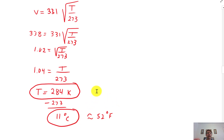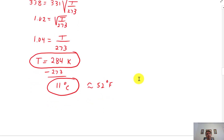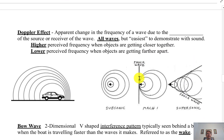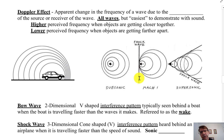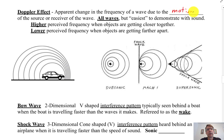Those are pretty straightforward. The nice thing about this chapter is it's pretty clear which equation to use for which problems. Here's a new concept: the Doppler effect. You've probably heard of this before with radar — they use this concept to track weather systems. In the more formal definition, it's an apparent change in the frequency of a wave due to the motion of the source or receiver of the wave. All waves can exhibit the Doppler effect — sound waves, light waves, water waves — but it's most commonly demonstrated with sound waves.